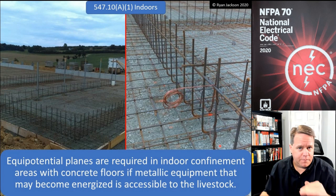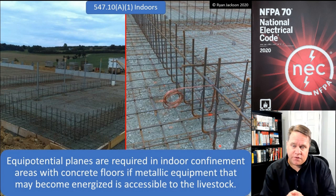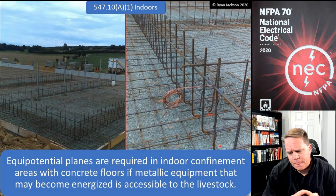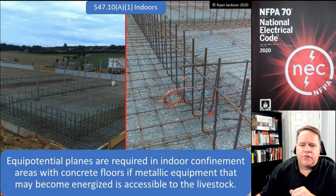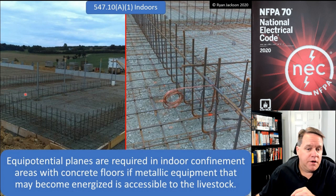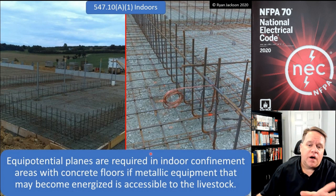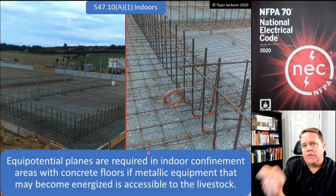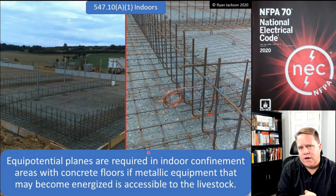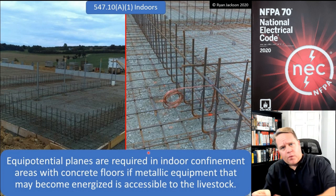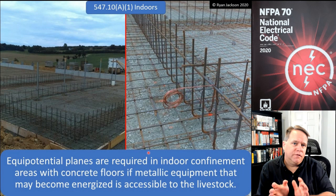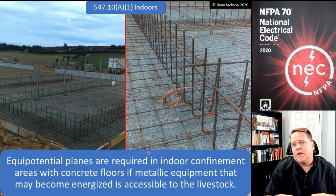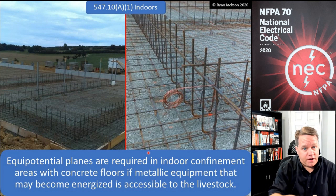We need to make sure cows aren't experiencing differences of potential when they walk around inside a barn, or especially when going from outside to inside. Article 547 requires rebar throughout the concrete slab in the barn, with all the rebar tied together using typical tie wires, then bonded to the service equipment and panelboards. This ensures everywhere the cow walks is at the same voltage. In some dairy farms, they'll actually create an equal potential ramp where the cows walk into the barn.